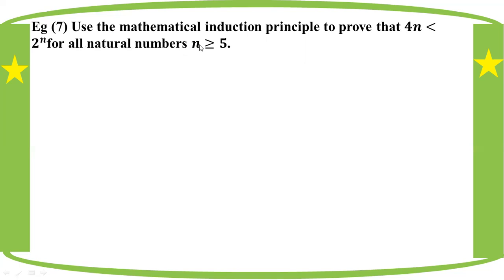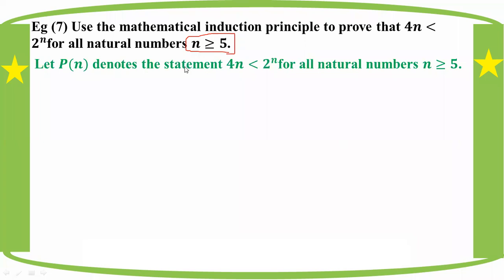We are going to prove the statement: for all natural numbers n greater than or equal to 5, n is less than 2 to the power n. Let P(n) denote the statement that n is less than 2^n, for all natural numbers n greater than or equal to 5.